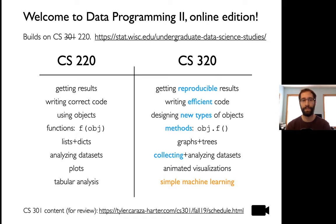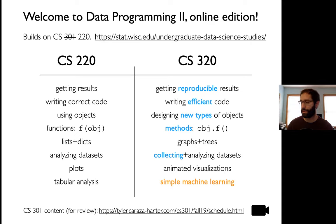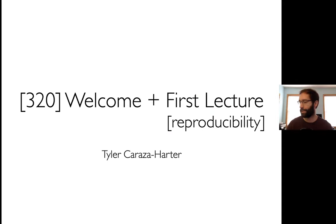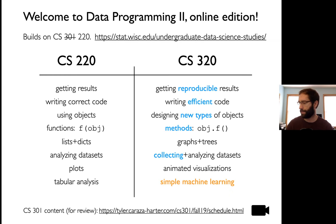This course builds on CS301, which is now renumbered to 220. If you've taken that course previously, this is an awesome place for you to be. Sometimes people have other backgrounds with Python or programming in general, and the course might also make sense. I'm happy to discuss that with you if you're not sure whether this course is the right fit. This course is also foundational to the data science major, so consider that if you enjoy this kind of course. You may want to be a data science major if you are not already.